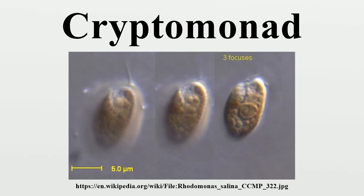Large ejectosomes, visible under the light microscope, are associated with the pocket. Smaller ones occur underneath the periplast.